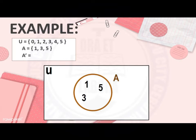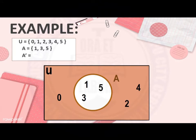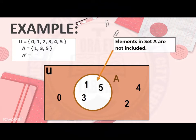Then we need to write the remaining elements found in the universal set. We should not write any number twice. Since we are done with 1, 3, and 5, we have three numbers left: 0, 2, and 4. Now, when we say A complement, these are the elements found in the universal set but not found in A. So, A complement is equal to 0, 2, and 4 only.